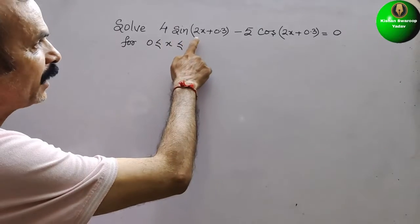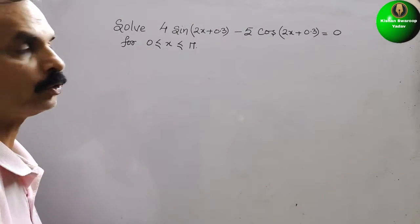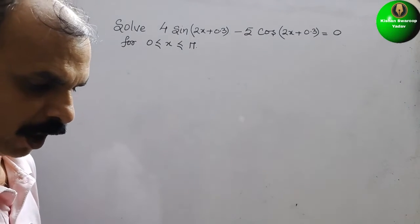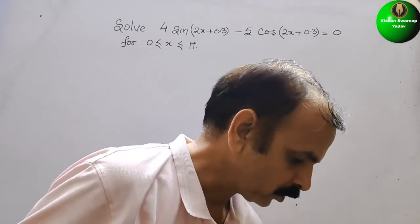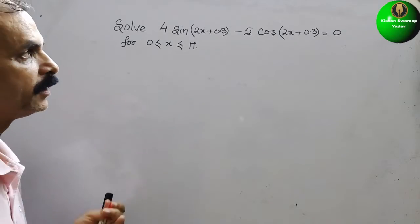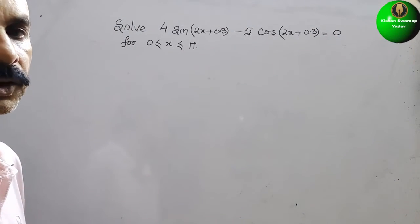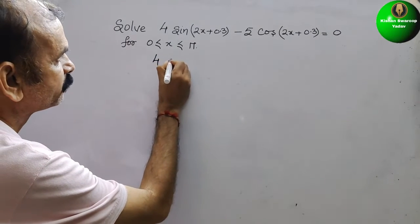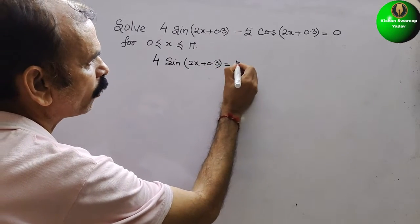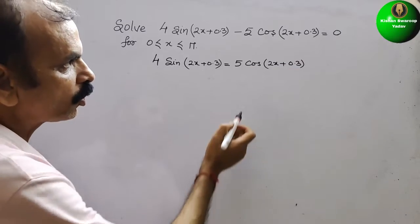The question is: solve 4sin(2x + 0.3) minus 5cos(2x + 0.3) = 0, for 0 ≤ x ≤ π. First, we bring the cos term to the right side, so the equation becomes 4sin(2x + 0.3) = 5cos(2x + 0.3).